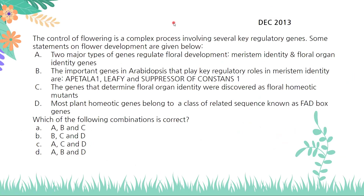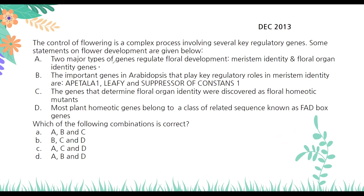Moving on to the next question: the control of flowering is a complex process involving several key regulatory genes. Some statements on flower development are given. Statement one: two major types of genes regulate flower development — meristem identity genes and floral organ identity genes. That seems correct. The important genes in Arabidopsis that play key roles in meristem identity are Apetala1, Leafy, and Suppressor of Constans — that is also correct.